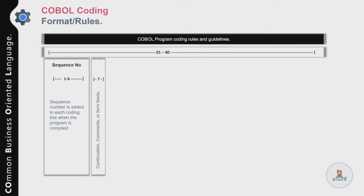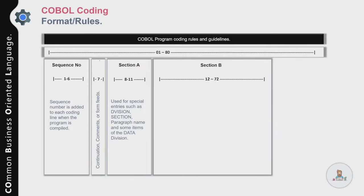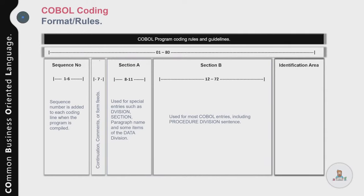From position 8 to 11 is termed Area A, generally used for special entries such as division names, section names, paragraph names, and some items of the Data Division. Position 12 to 72 is termed Area B and is used for most COBOL entries including Procedure Division sentences. Positions 73 to 80 are the identification area, originally used to identify a program but no longer used today.